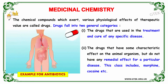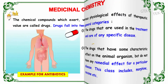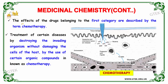In medicinal chemistry, chemical compounds which exert various psychological effects of therapeutic value are called drugs. Drugs fall into two general categories: the drugs used in the treatment and cure of a specific disease, and the other type which have a remedial effect for a particular disease. This second class includes morphine, cocaine, etc.